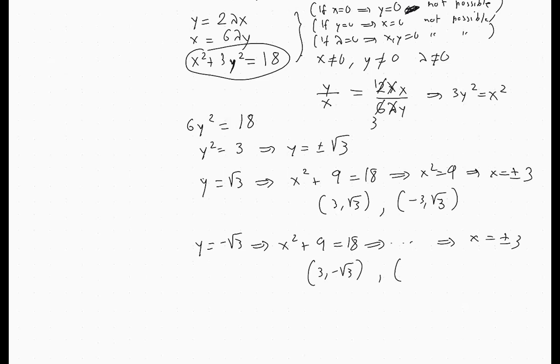So that gives us four points, and here we have a domain, namely the ellipse, which is a compact domain. So the minimum and the maximum are guaranteed to exist.